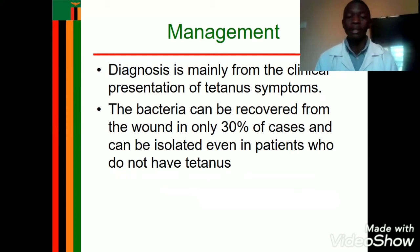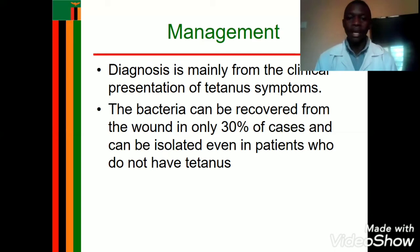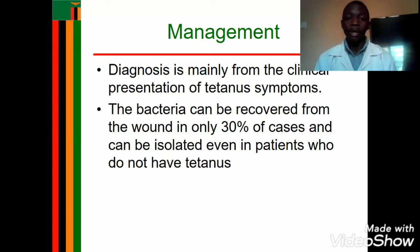Ensure the environment is warm enough to prevent hypothermia, has good lighting for easy observation, and is dust-free to prevent nosocomial infections. Ensure necessary resuscitative instruments are available whenever needed. Under infection prevention: wash hands before and after handling the patient, sterilize and decontaminate instruments used on the child to prevent spread of infection.